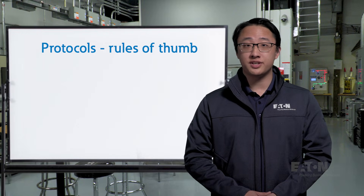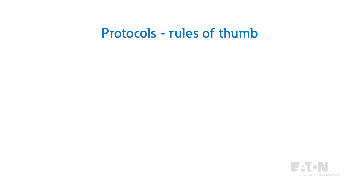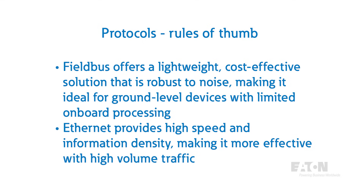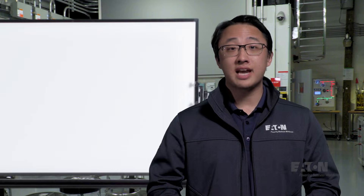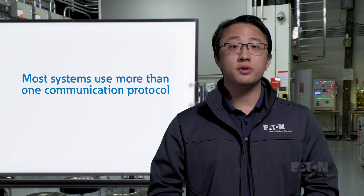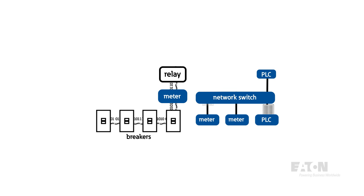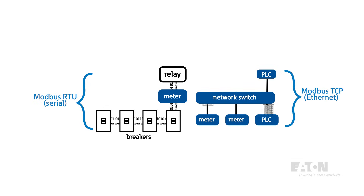Although there's no ironclad rule on what devices use what communications, understanding the advantages of each protocol gives a general guideline for what to expect. Fieldbus is lightweight, cheap, and robust to noise, making it ideal for ground-level devices that don't do much onboard processing, like breakers or variable frequency drives. Ethernet, with its high speed and information density, is more effective at high-volume traffic, like data from power quality meters or instructions from PLCs. Unless you have a very small system, it'd be very rare to use only one type of communication protocol — many devices support multiple protocols, enabling a hybrid system. You could use Modbus RTU at the distributed device level for its simplicity and cost, and then link PLCs together on an Ethernet network to process data and manage the entire facility.